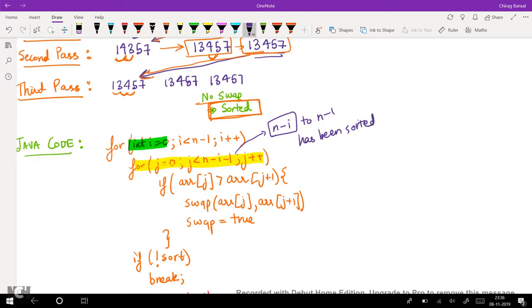Like if it is the first pass we know that the (n-1)th element, that is the last element, has been sorted. If we are in the second pass we know that the (n-2) and (n-1) elements have been sorted. Therefore we only check till n-i-1.